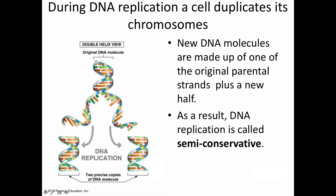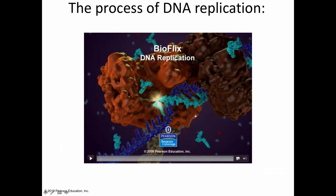Essentially what happens in this replication process is we start with one DNA molecule, unzip it, conserve those two original strands, and build new strands off of them. We call this process semi-conservative, because in each of the two new DNA molecules, one strand is from the original parental DNA molecule and the other strand is new.